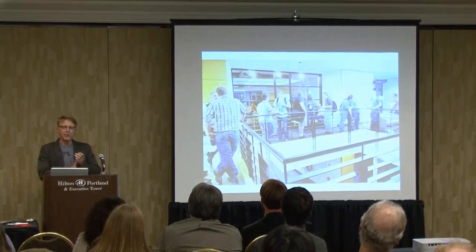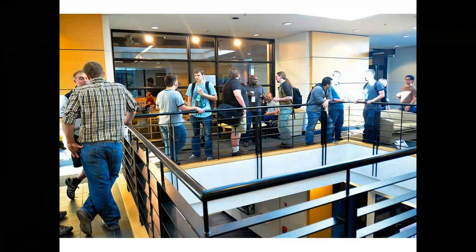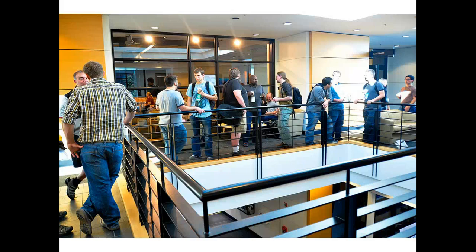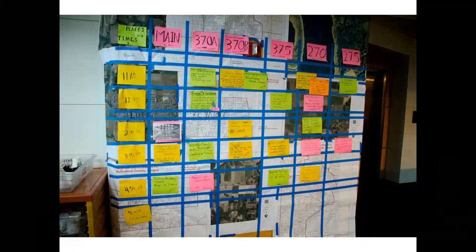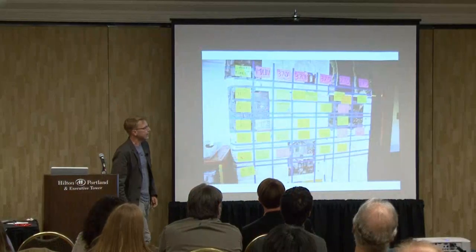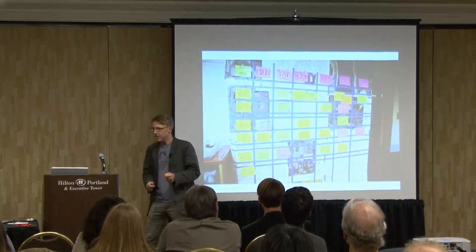An unconference is a conference with no fixed agenda. Everybody gets together at the beginning and we decide what we're going to talk about. It sounds chaotic, but the quality tends to be really high. This is a meeting board from WhereCamp — everyone puts together ideas, we do it over two days, and it's a lot of fun.